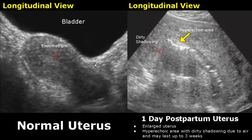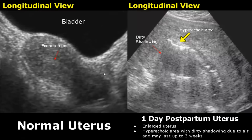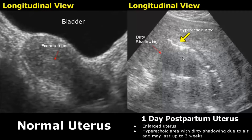Postpartum findings are features seen in the uterus after delivery. On the left side is a normal uterus without any recent pregnancy, showing normal size, echo texture, and shape. On the right side is a one-day postpartum uterus — the uterus is enlarged, and by comparing it with the normal uterus we can see it is much bigger. The endometrial canal can have hyperechoic bright areas.